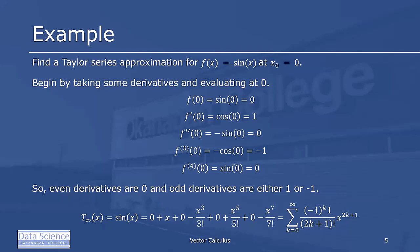Which tells us that the Taylor series for sin(x) has to look something like 0, plus x, plus 0, minus x^3 over 3 factorial, plus 0, plus x^5 over 5 factorial, plus 0, minus x^7 over 7 factorial.